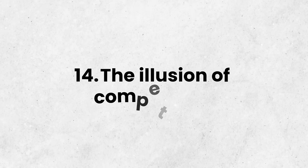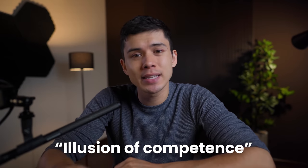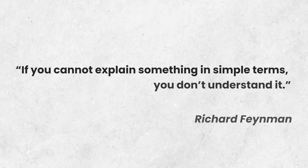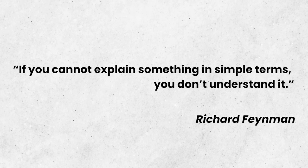The illusion of competence: it's easy to trick yourself into thinking you know a topic, but recognizing a topic is very different from understanding it. The easiest way to test whether you truly understand something on a deeper level is whether you can explain it in depth using very simple terminology. As theoretical physicist Richard Feynman once said: 'If you cannot explain something in simple terms, you don't understand it.'